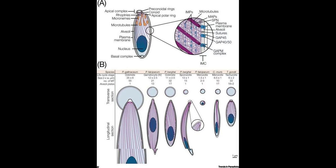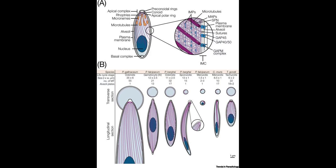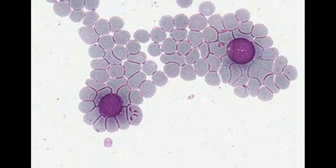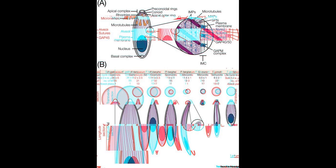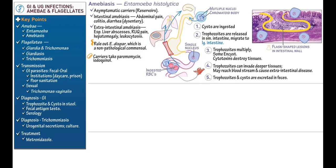The eimeritorans are a diverse group that includes one-host species of invertebrates, two-host species of invertebrates, one-host species of vertebrates, and two-host species of vertebrates. Heteroxynus alternates between a vertebrate host and an invertebrate host.